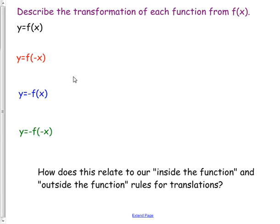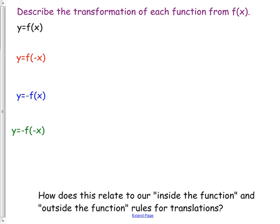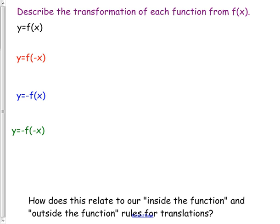Today we're talking about flipping parent functions - also known as the mother function or father function. For instance, y equals x squared is your parabola, but if you want that to flip, you do it with a negative. Copy this into your notes: y equals f of x, f of negative x (negative on the inside), negative f of x (negative on the outside).